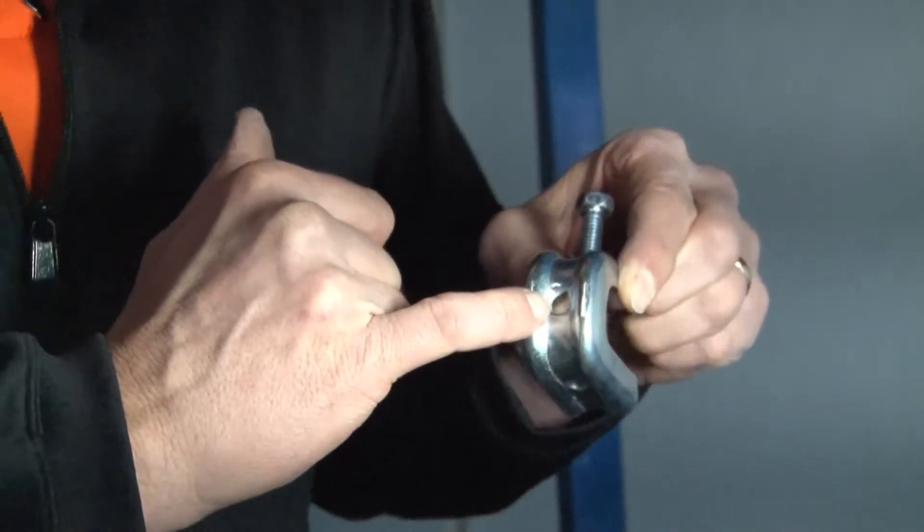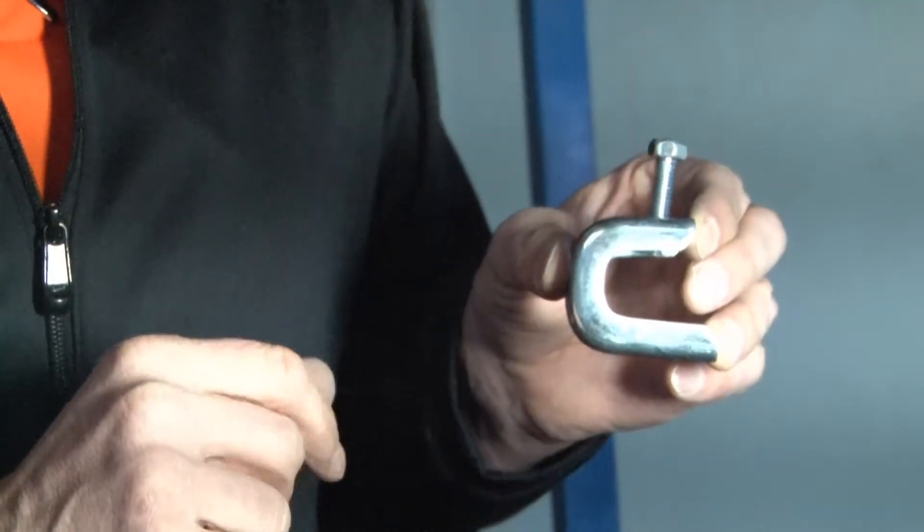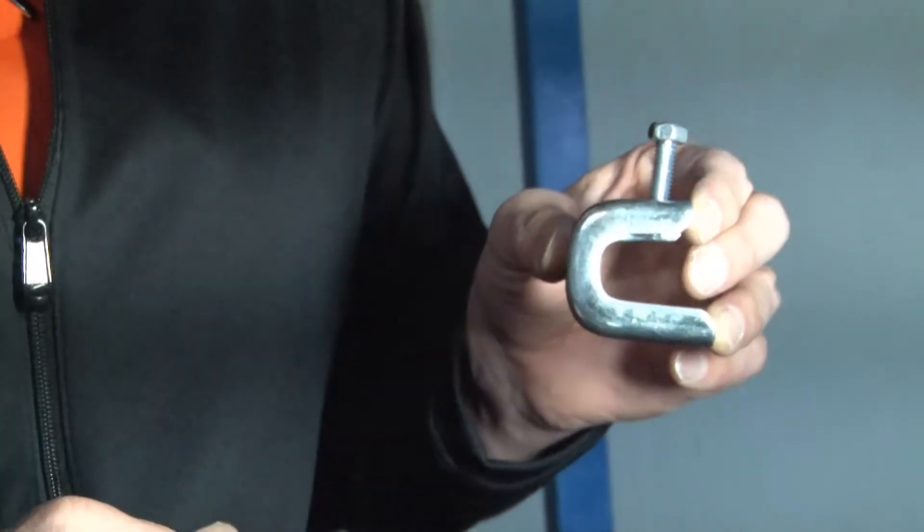These beam clamps have threaded holes on the back and bottom to allow the installer to drop fasteners or threaded rod off the back or bottom of the beam clamp.